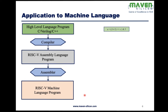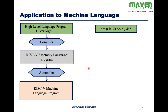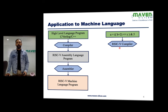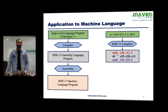Look at this example. This is how we define an expression in a high-level language — it could be SystemVerilog, C, or C++. That is an expression, and the RISC-V compiler converts this expression into assembly language. So these are all RISC-V instructions.